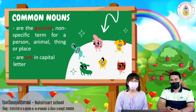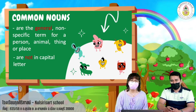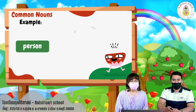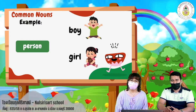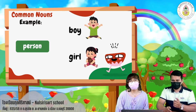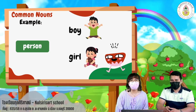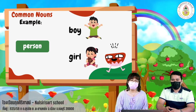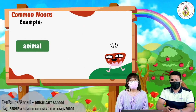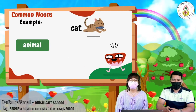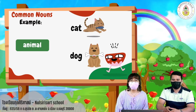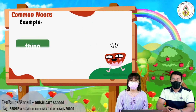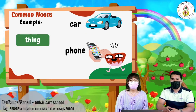Now let's see some examples of common nouns. First, for person, we have boy and girl. Next example, for animal, we have cat and dog. For thing, we have car and phone.